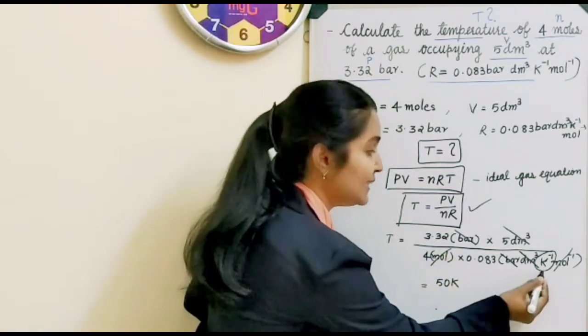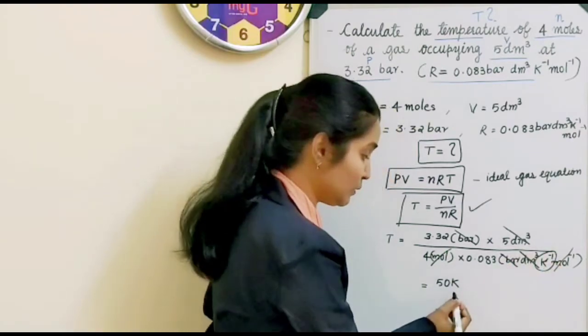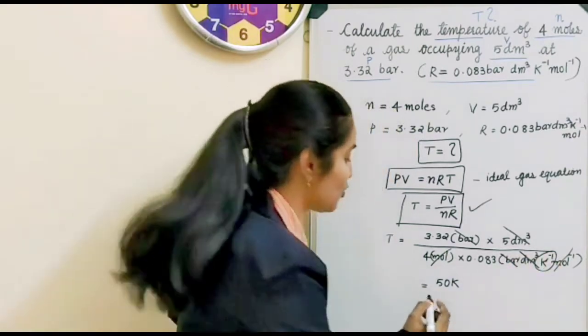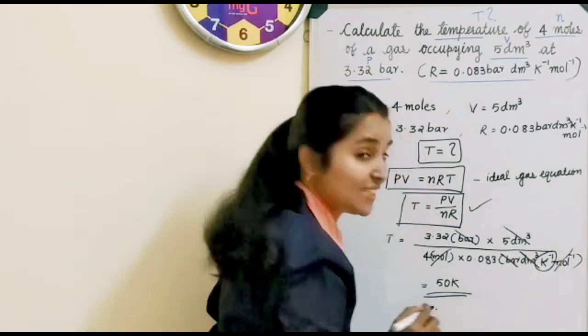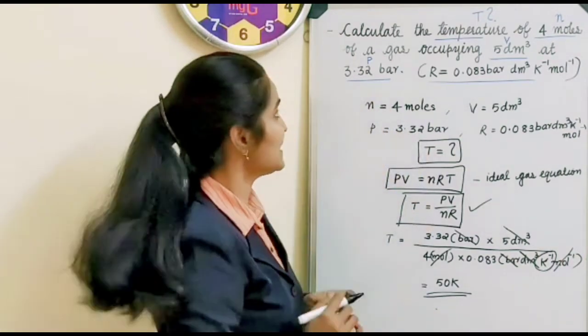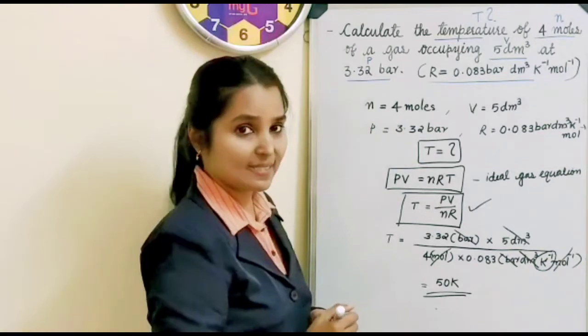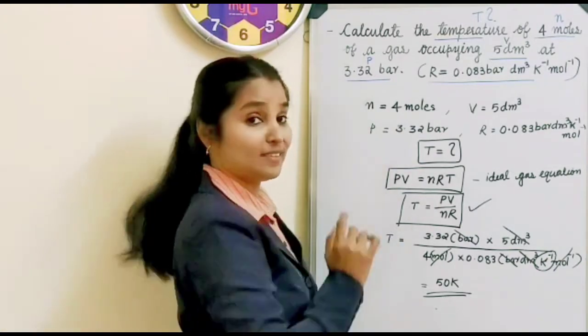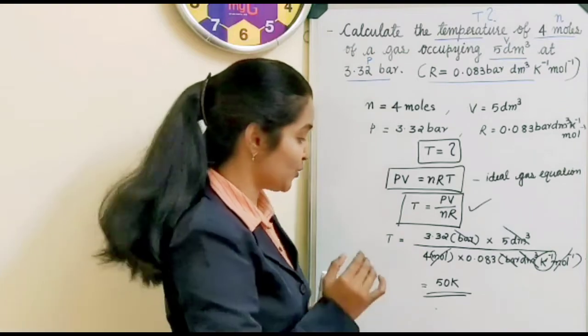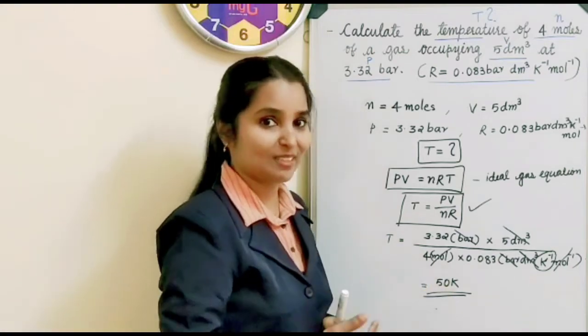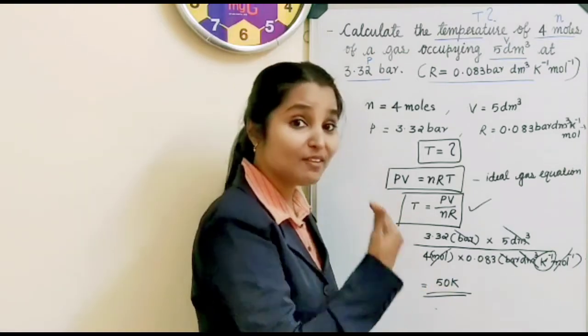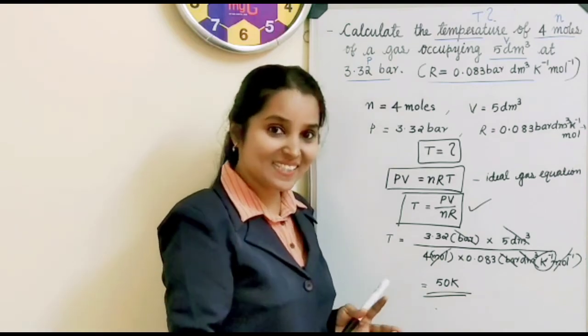So 3.32 divided by 4 into 0.083, we will get 50. And then this K⁻¹ when comes up it becomes K, kelvin. So what is the temperature? 50 kelvin is the temperature. So that's our answer. Calculate the temperature of 4 moles of the gas occupying 5 dm³ by 3.32 bar pressure. So what is the temperature? We have calculated the temperature. The temperature is 50 kelvin. So it's easy. Right.